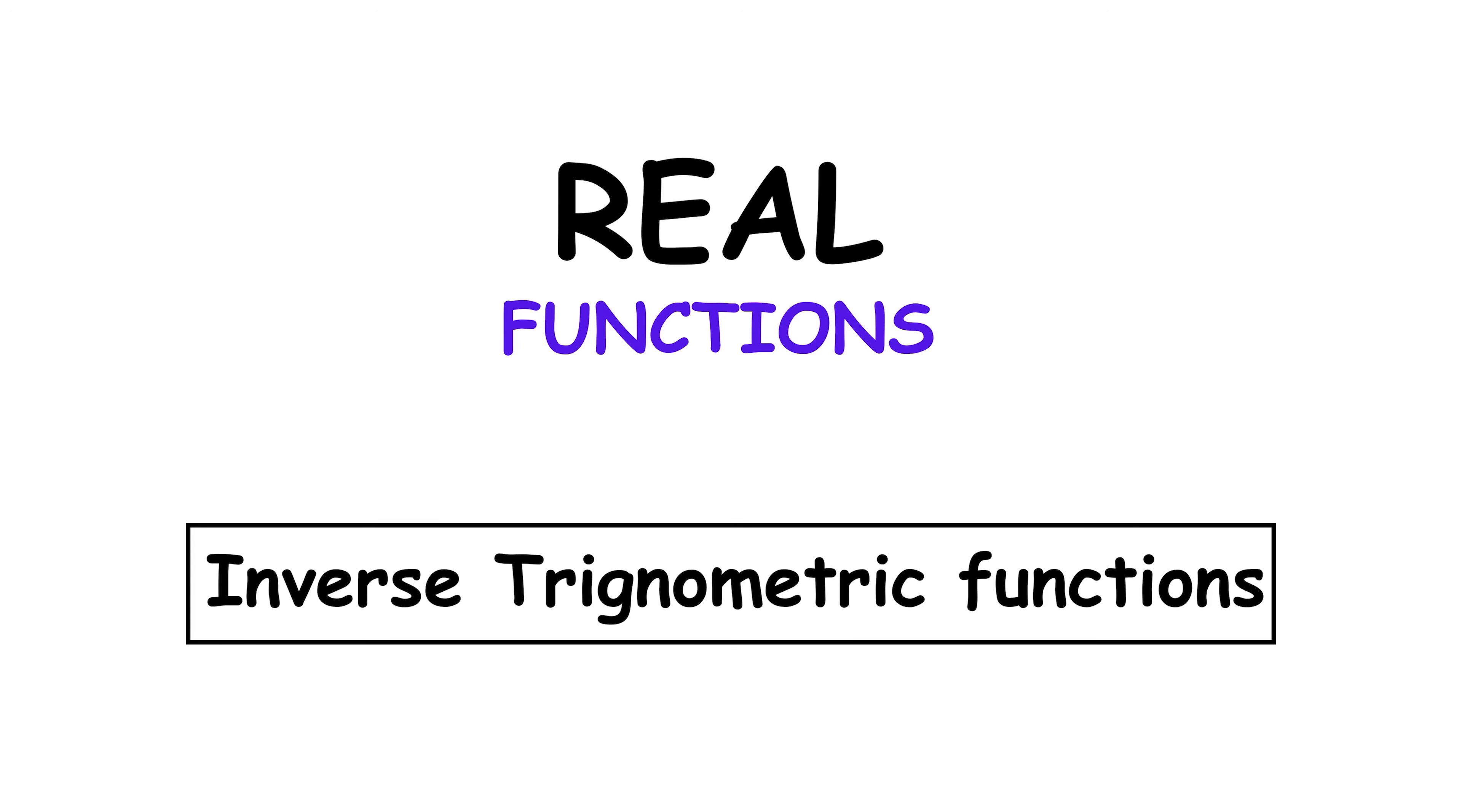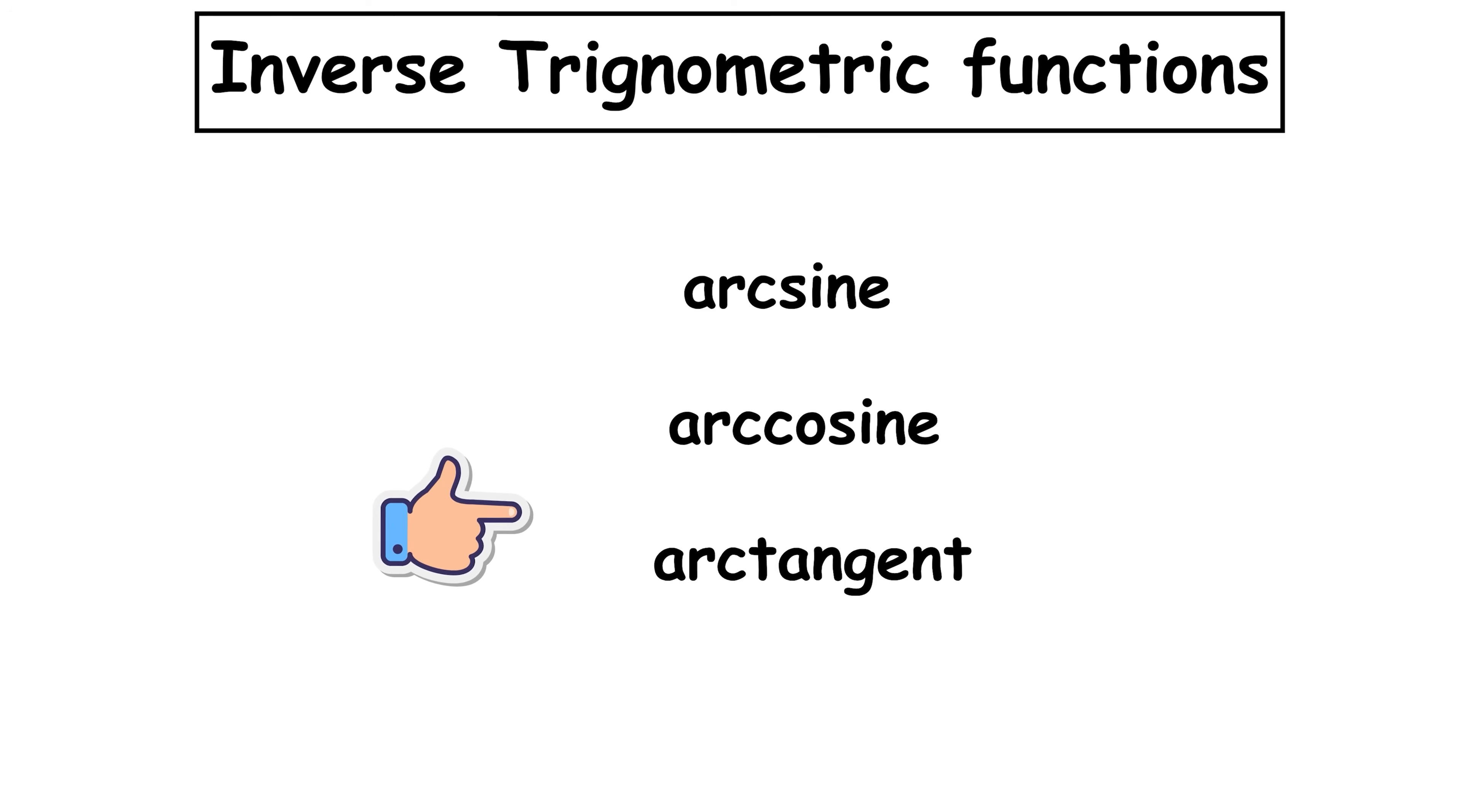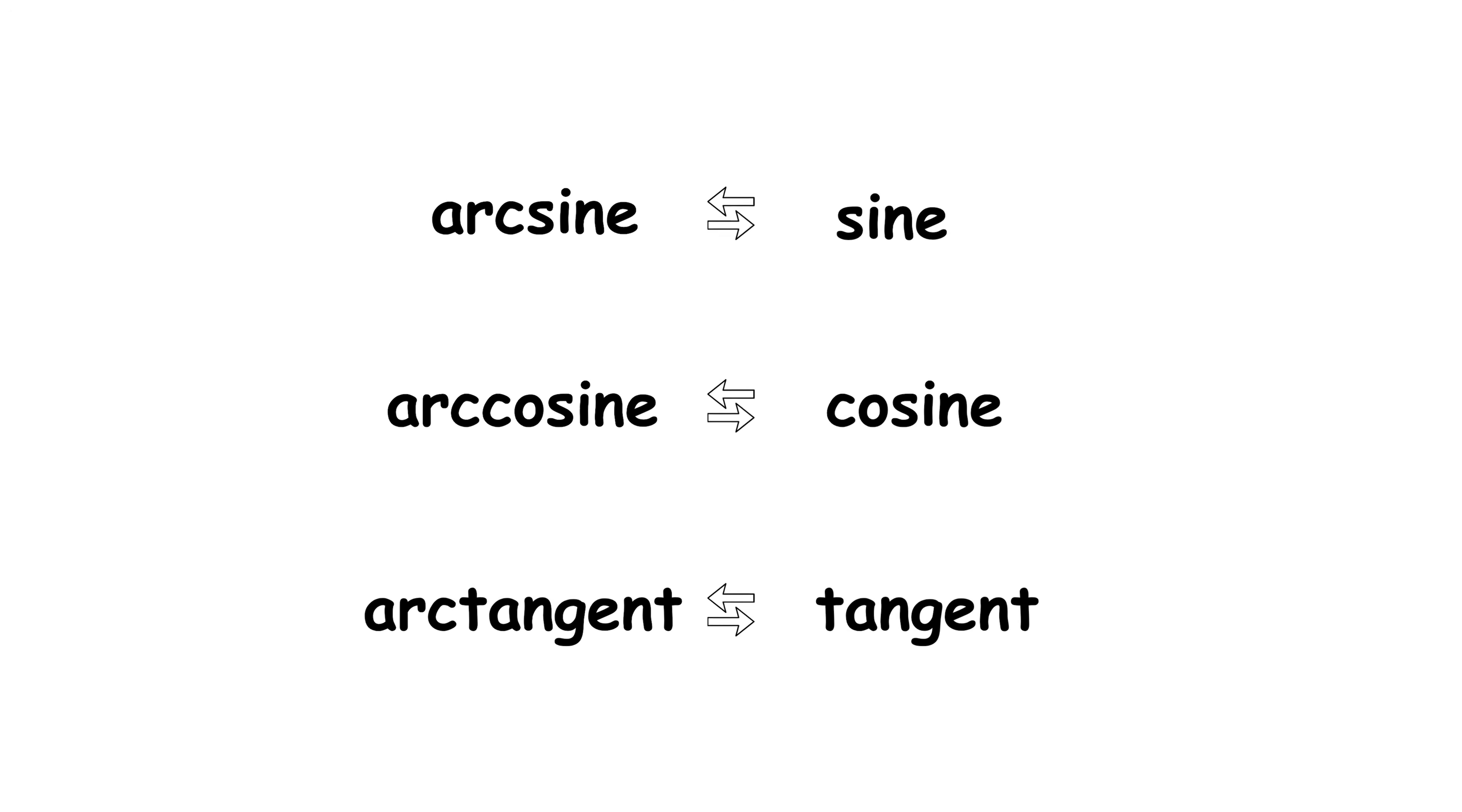Inverse trigonometric functions. Inverse trigonometric functions allow the calculation of angles from the value of a trigonometric ratio. The main ones are arcsine, arccosine, and arctangent, which are the inverses of sine, cosine, and tangent, respectively.